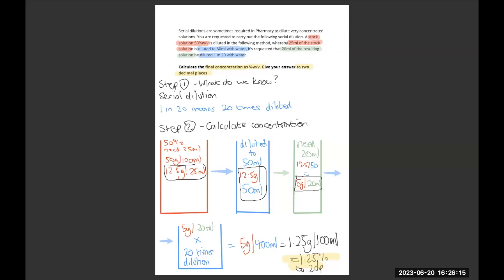Hi guys, welcome to question 39. This is an example of a serial dilution question. With this one, there's a lot going on. You've got a strength, you're diluting it, and then you're diluting it again, and then you're diluting it using the dilution factor. So, please work it slowly.